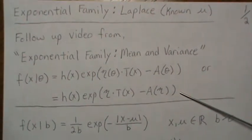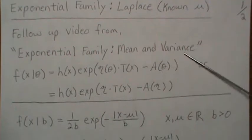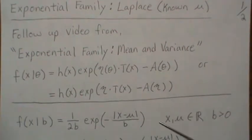This second form is called the canonical form, and that'll help us when we're finding the mean and the variance of the sufficient statistics.